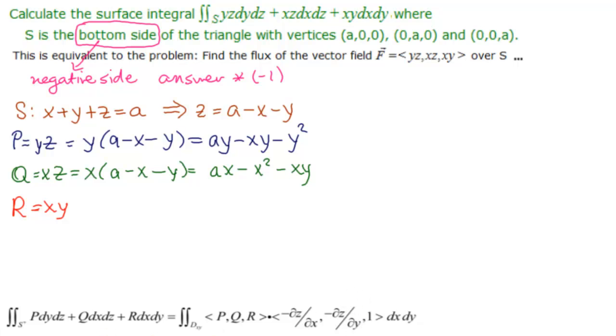And then we need to find these components. We need to take the partial with respect to x and the partial with respect to y. So we have ∂z/∂x is equal to minus 1, and ∂z/∂y is equal to minus 1.